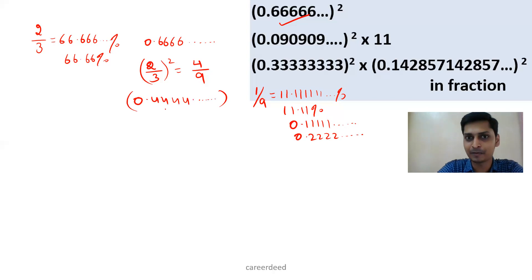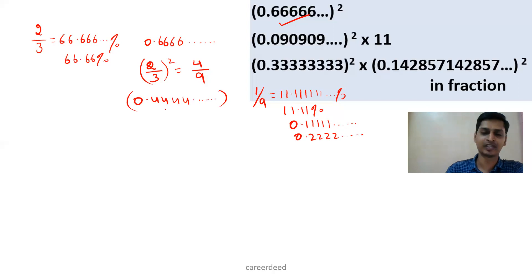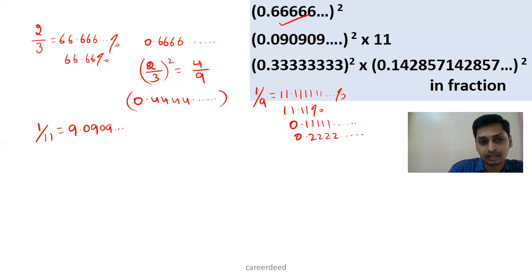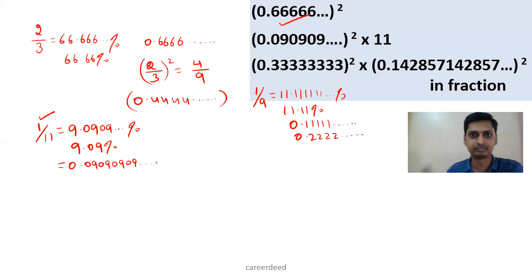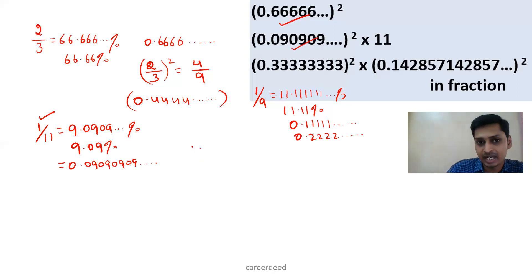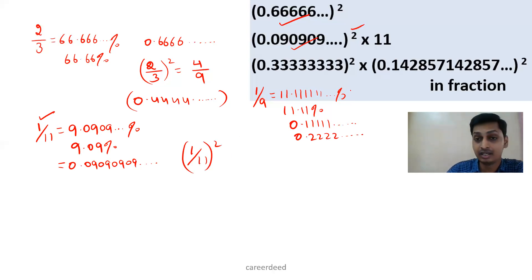So 4/9 is nothing but 0.444444 — that recurring number is our answer. Now look at the second question: you have 0.090909090909 and so on. We know 1/11 is 9.0909% recurring. If you type this value in a calculator you will get 0.090909 up to infinity. We can write 0.09090909 as (1/11) whole squared.